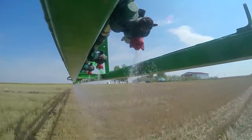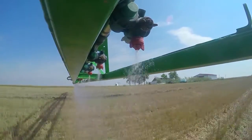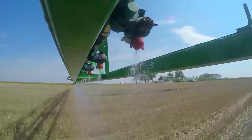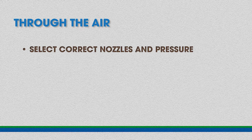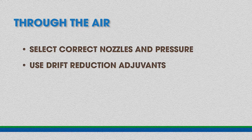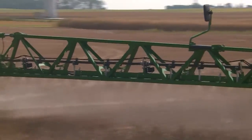To ensure that we deliver a spray solution to the target surface through the air, we need to keep a couple things in mind. We need to have the right nozzles to make sure we're creating the right droplet sizes. We need to make sure that we're using the right adjuvants to ensure that the droplets reach the target surface. And we need to be mindful of the weather to make sure we have optimum conditions for our application.